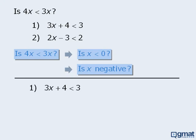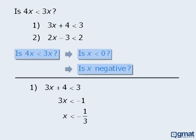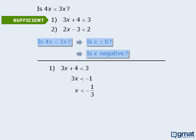Now let's examine statement 1. We can simplify it by subtracting 4 from both sides and then dividing both sides by 3. So statement 1 essentially tells us that x is less than negative one-third. Does this provide sufficient information to answer one of our new target questions? Sure — if x is less than negative one-third, then x must be negative. So statement 1 is sufficient.